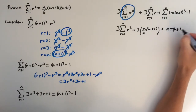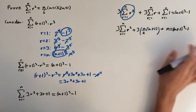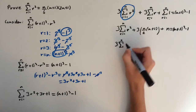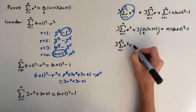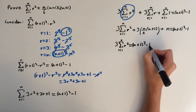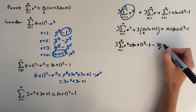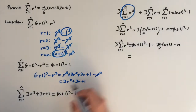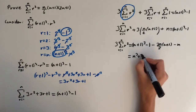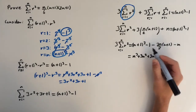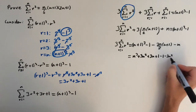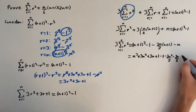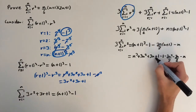Now I'm going to move all the other terms to the right-hand side, leaving just 3 times sigma of r squared on the left. This equals n plus 1 cubed minus 1 minus 3 times n over 2 times n plus 1 minus n. Expanding n plus 1 cubed gives n cubed plus 3n squared plus 3n plus 1, then minus 1, minus 3n squared over 2, minus 3n over 2, and minus n at the end.